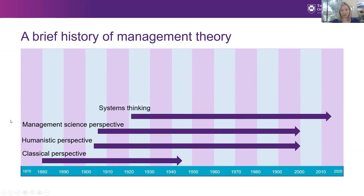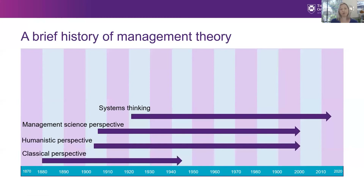Systems thinking is the ability to see both the distinct elements of a system or situation and the complex, changing interactions amongst those elements. This topic will be explored in more detail later in the course.